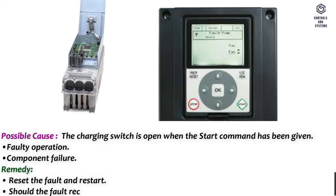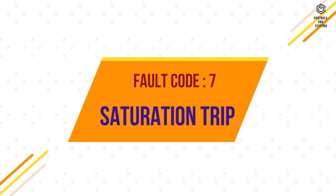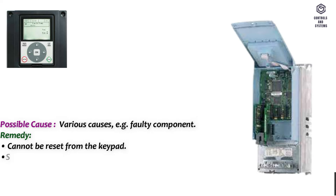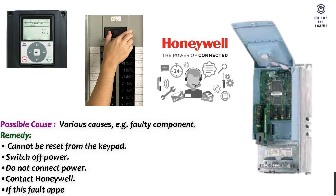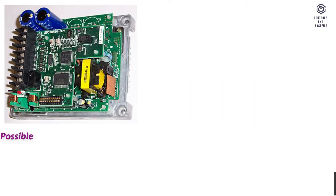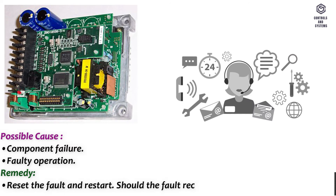Fault code 7 – Saturation trip. Possible cause: various causes, for example a faulty component. Remedy: cannot be reset from the keypad; switch off power, do not reconnect power, and contact Honeywell. If this fault appears simultaneously with fault 1, check motor cables and motor. Fault code 8 – System fault. Possible cause: component failure or faulty operation. Remedy: reset the fault and restart; should the fault recur, contact technical support.